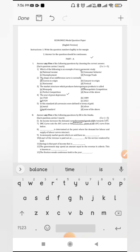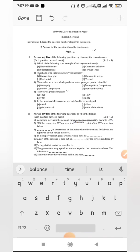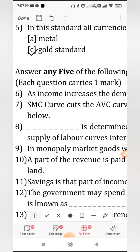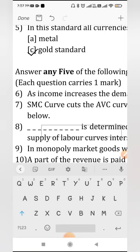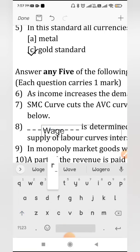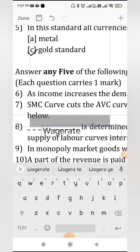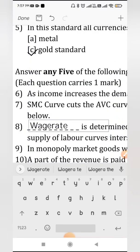Now we will move on to the next question which is dash is determined at the point where the demand for labour and supply of labour curve intersect. We will identify or determine the wage rate based on the demand of the labour and the supply of the labour. The answer will be wage rate. We are done with this.